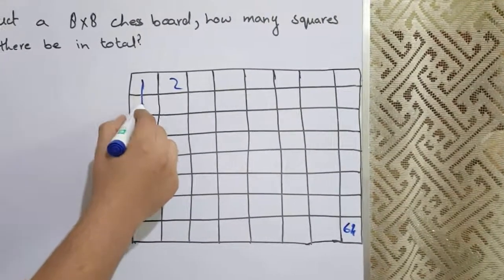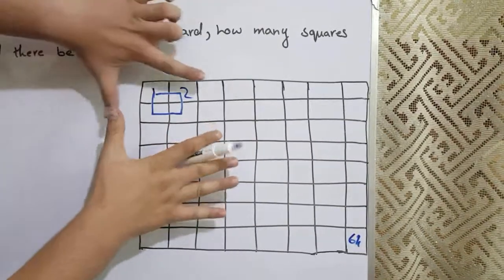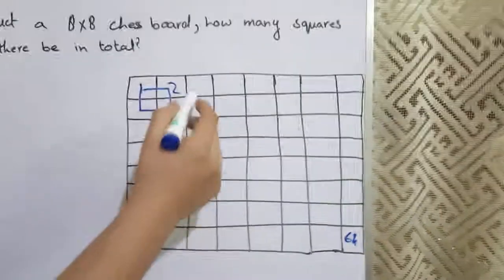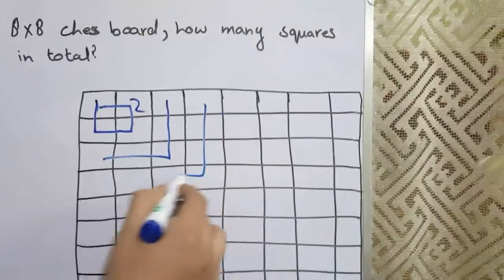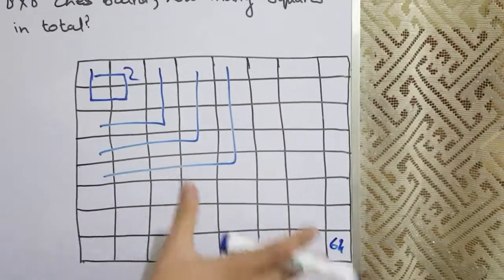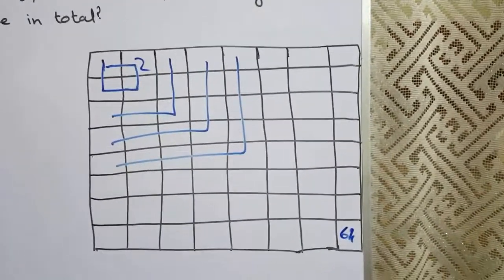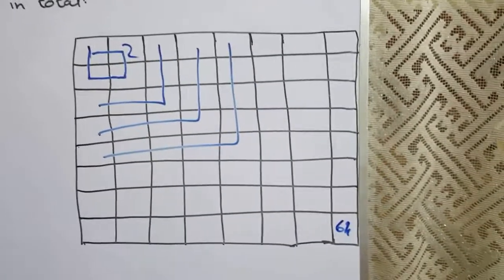Like, if you join 2 rows and 2 columns like this, you can see there's another new square over here. Just like that, we can construct a 3x3, 4x4, 5x5, and so on to 8x8 that it is itself. Now, the thing is that we need to calculate how many total squares there actually are.